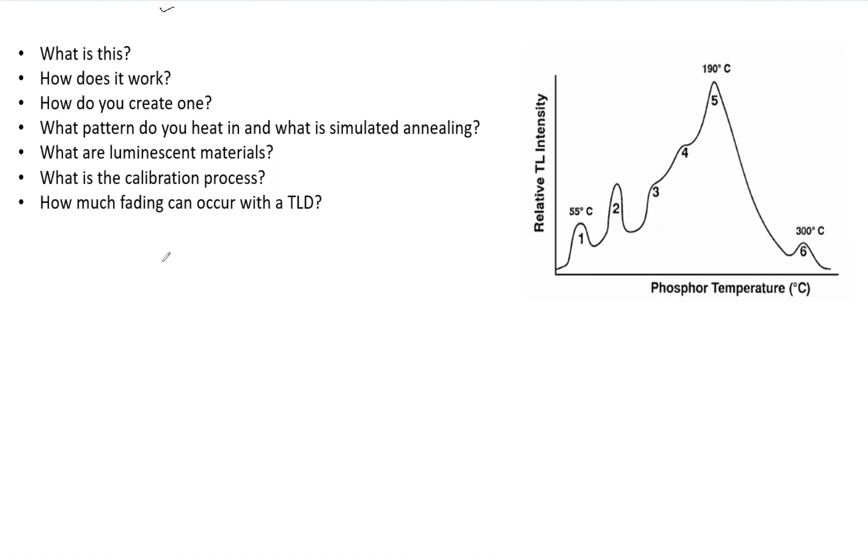Right here we see relative thermal luminescence compared to temperature, so that is a glow curve from a TLD. That's important to be able to pick this out. Now how does it work? The heat rate for the TLD is kept constant so you can plot this thermal luminescence versus time.